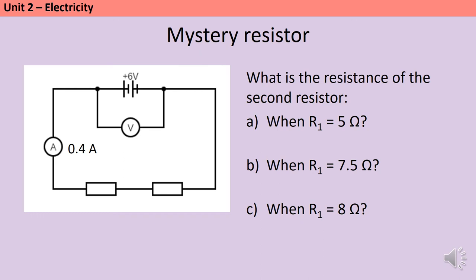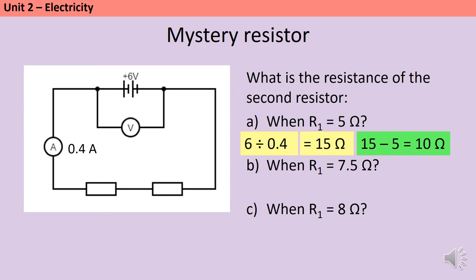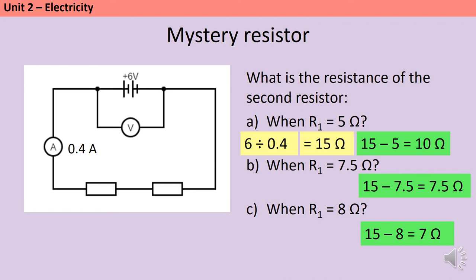Here are three more questions of a similar type. For these three the current remains the same but we're changing the resistance of resistor 1. Pause the video and write down what you think the resistance of resistor 2 is in each instance. We start by working out the total resistance: 6 divided by 0.4 is 15 ohms, which remains true for parts A, B and C. If resistor 1 is 5 ohms then resistor 2 is 10 ohms. If resistor 1 is 7.5 ohms then 15 take 7.5 is 7.5 ohms, and in the final part we get an answer of 7 ohms.